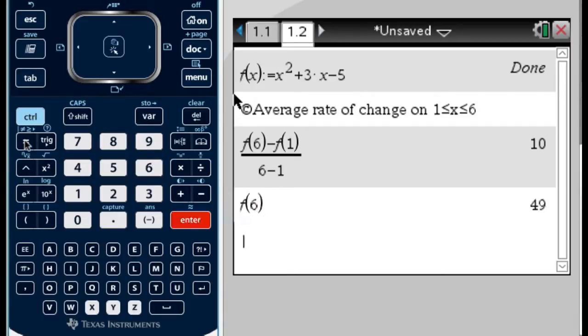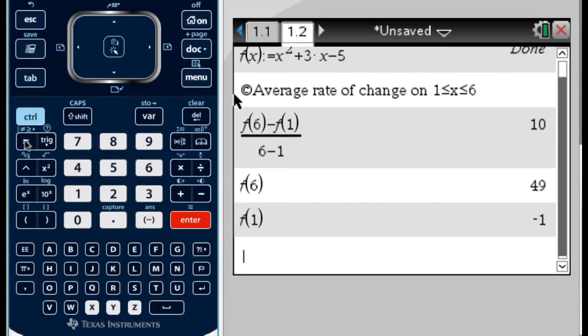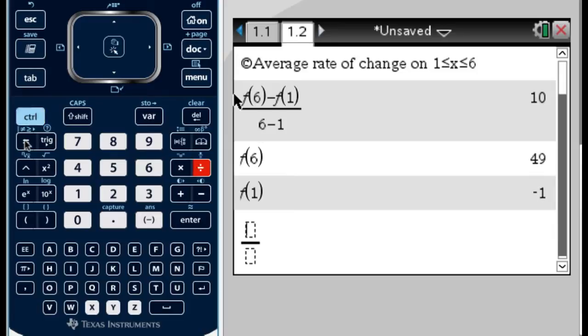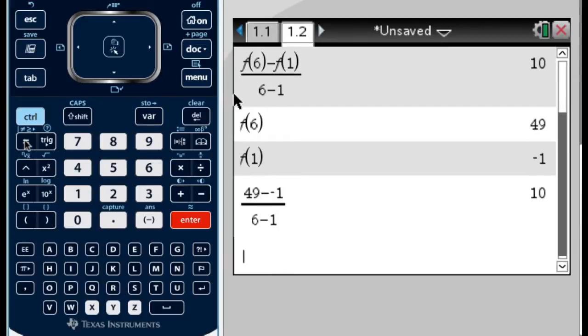So if I do f of 6, that gives me 49. And if I do f of 1, I get negative 1. So what I could have done is 49 minus negative 1 over 6 minus 1, and I get the same answer, but it's so much easier to use function notation.